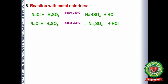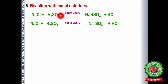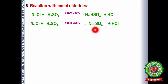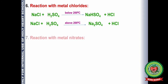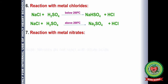Next is the reaction of acids with metal chlorides. Sulfuric acid ionizes in two steps and can form two types of salts. When NaCl reacts with H₂SO₄ below 200°C, it forms the acid salt sodium hydrogen sulfate (NaHSO₄) along with HCl gas. When NaCl reacts with concentrated H₂SO₄ above 200°C, it forms sodium sulfate (Na₂SO₄) and HCl gas.